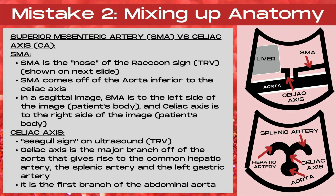The next anatomy that is commonly mixed up when imaging the aorta is the SMA — the superior mesenteric artery — and the CA, the celiac axis. The SMA should be recognized as the nose of the raccoon sign, which will be shown on the next slide. The SMA comes off of the aorta inferior to the celiac axis, and in a sagittal image, the SMA is to the left side of the image — the left side of the patient's body — and the celiac axis is to the right side of the image, or the right side of the patient's body.